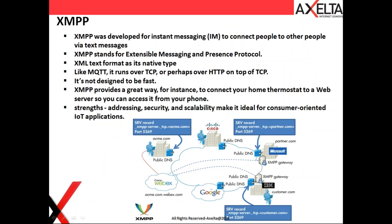XMPP — Extensible Messaging and Presence Protocol — was originally developed for instant messaging between people. It is a lightweight protocol that works over TCP. It's not designed for fast communication, but it can be used for IoT applications to connect things and access them from the internet, where each device connects to an individual server.